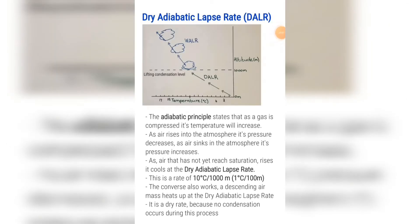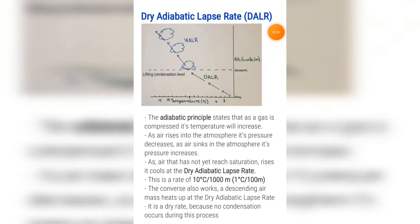We are going to be looking at the dry adiabatic lapse rate first. The adiabatic principle states that as a gas is compressed, its temperature will increase. So as air rises into the atmosphere its pressure decreases, and as air sinks in the atmosphere its pressure increases. As air that has not yet reached saturation rises, it cools at the dry adiabatic lapse rate — a rate of 10 degrees per thousand meters, or one degree for every 100 meters.